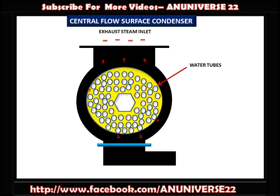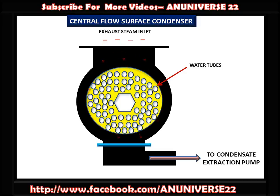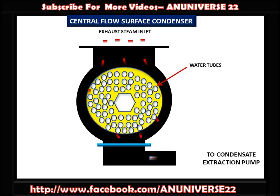The condensate is collected at the bottom and then pumped by the extraction pump, as shown in this video. The central flow surface condenser is an improvement over the downflow type, as steam is directly directed radially inward by a volute casing around the tube nest, giving access to the whole periphery of the tubes.